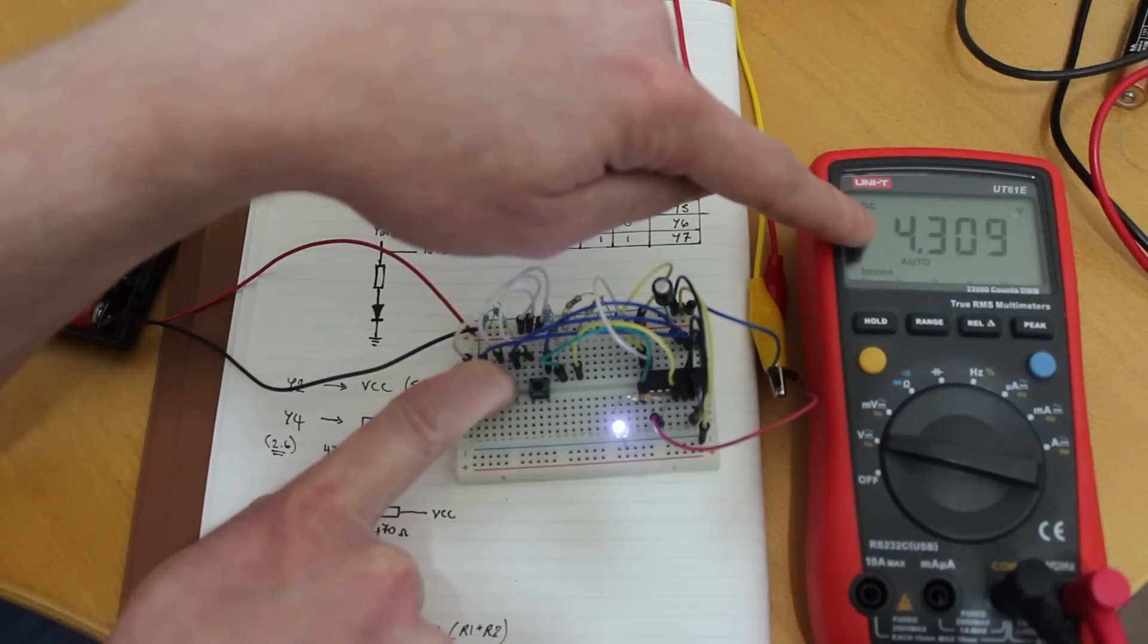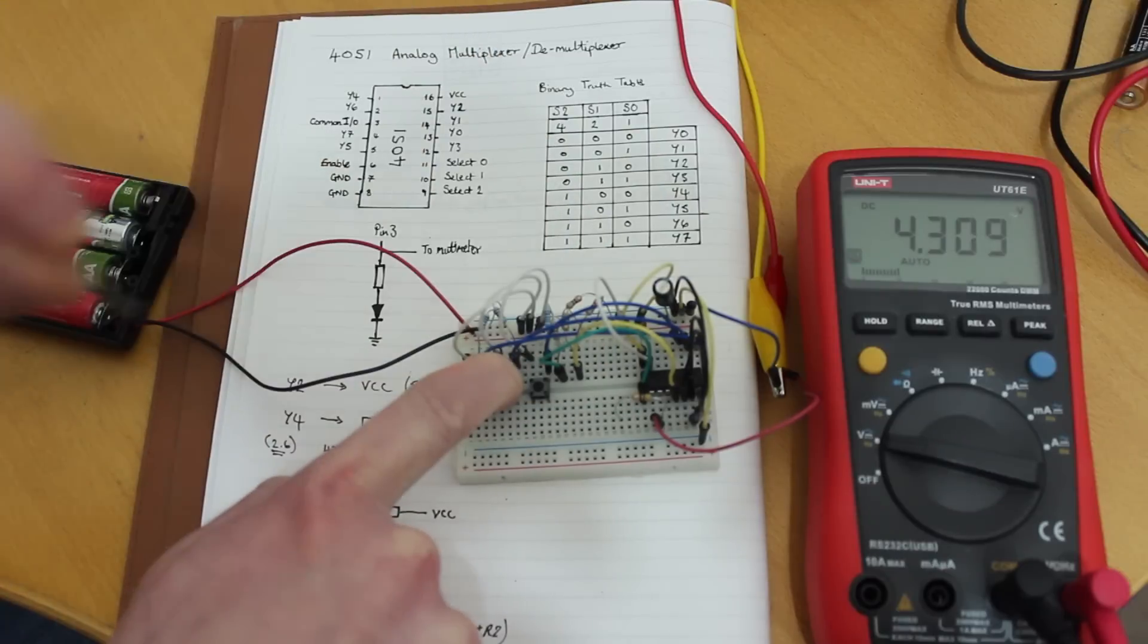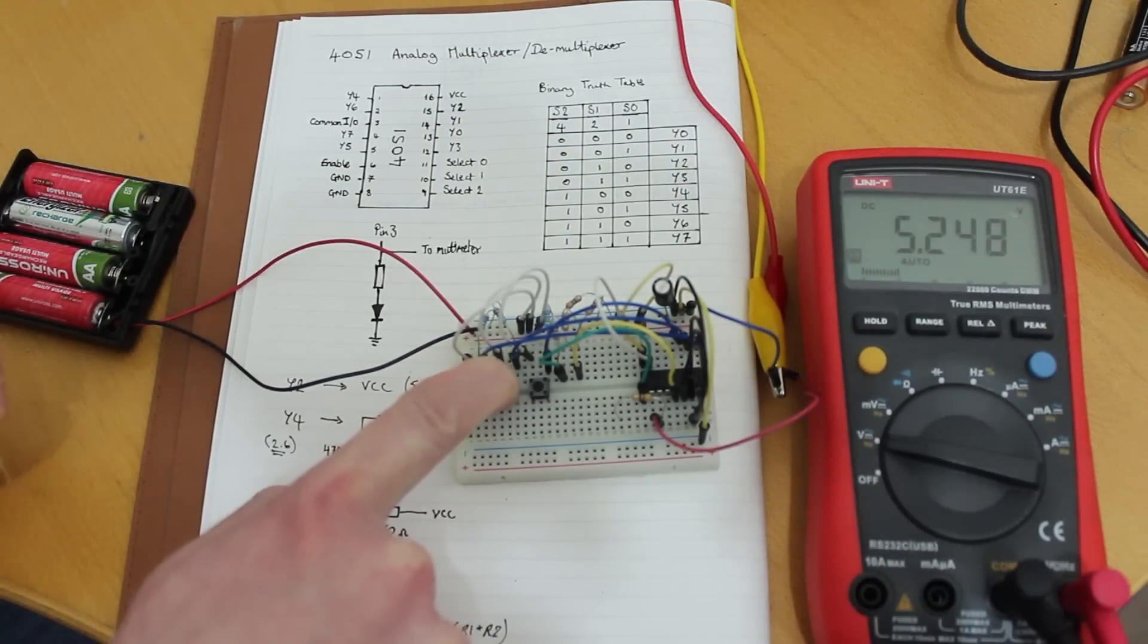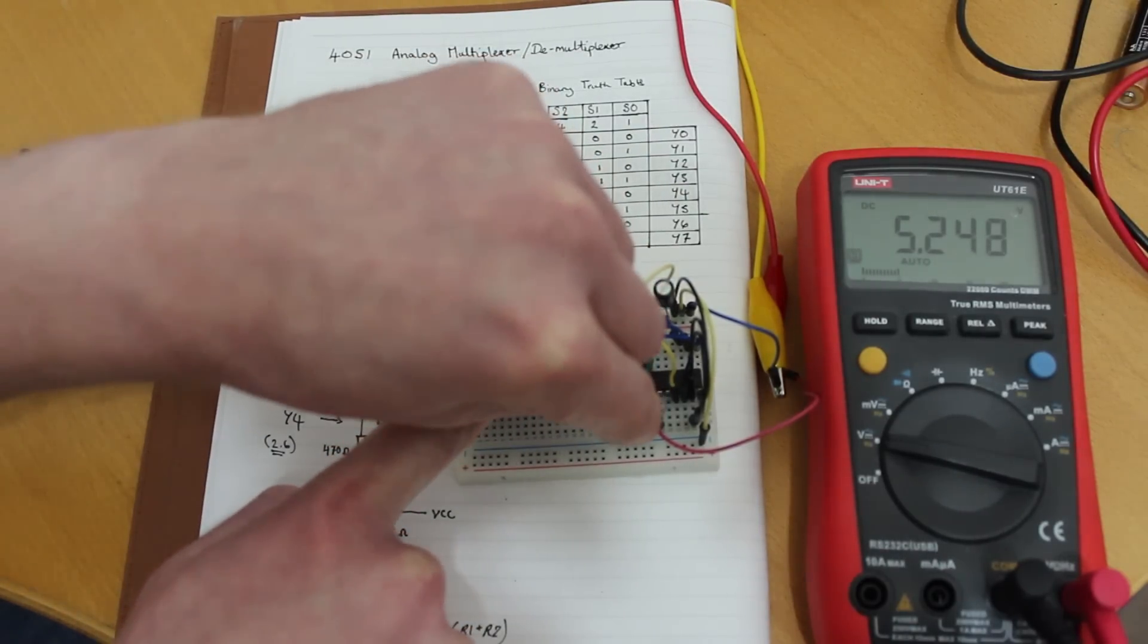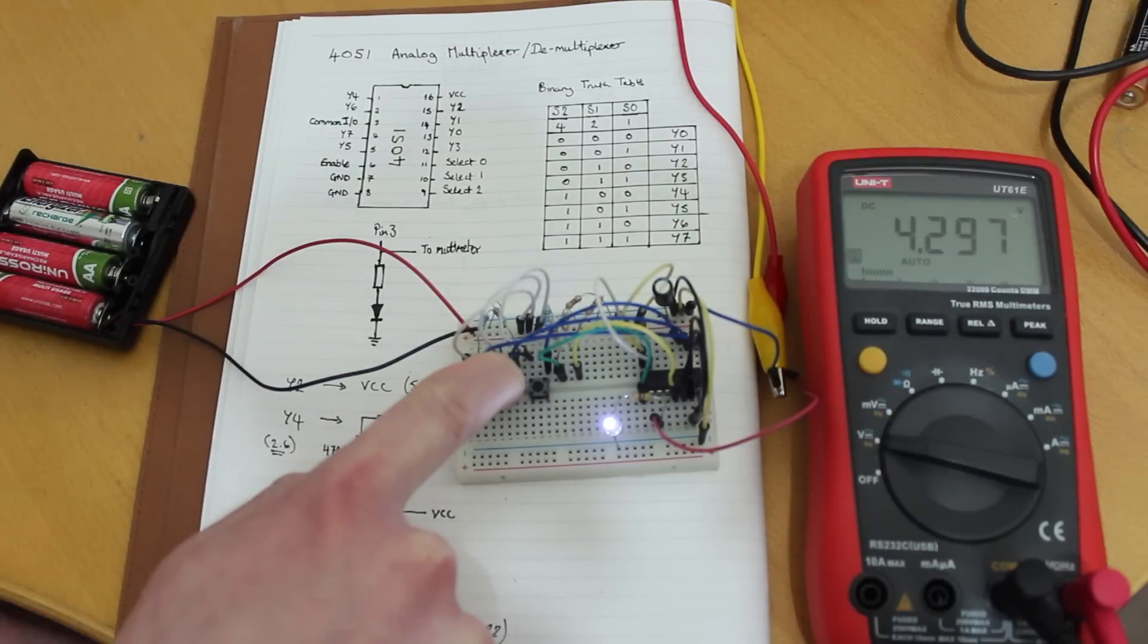And again, I said that the voltage would drop. If I just pull out that LED, it should shoot up to 5.2. But I'll pop it back in there so that you have a visual representation.